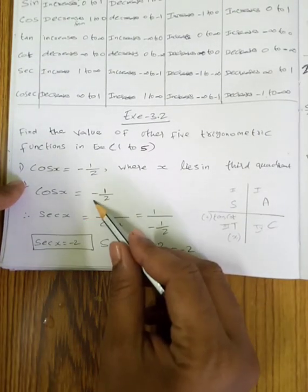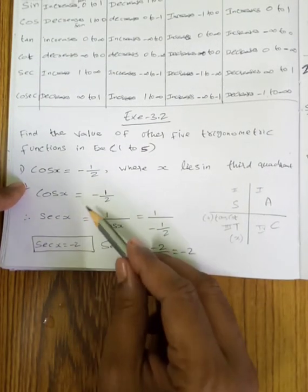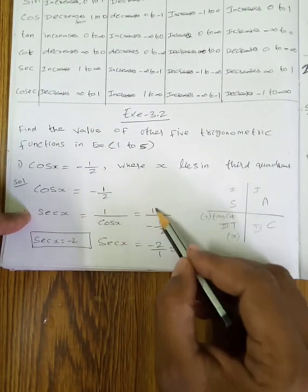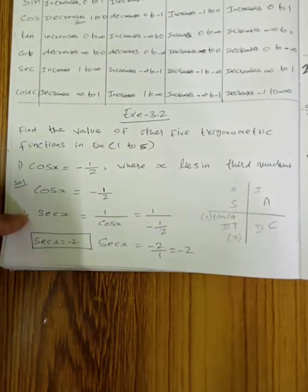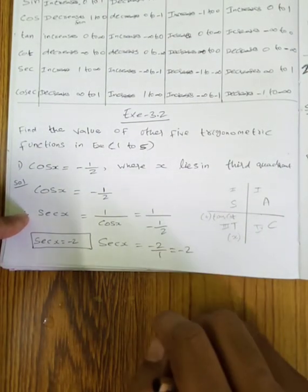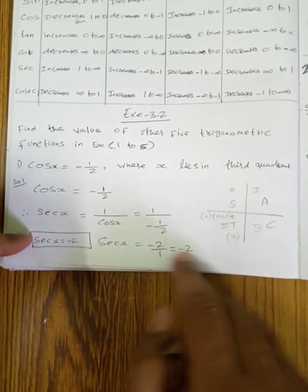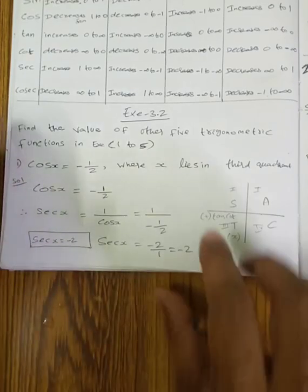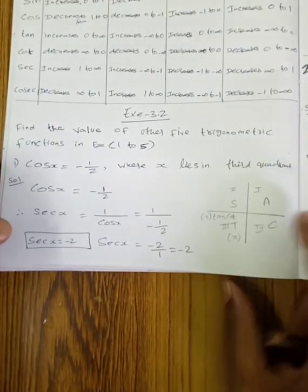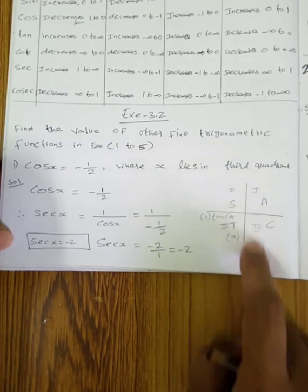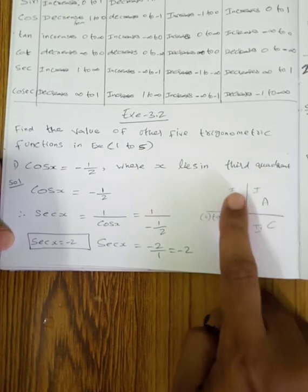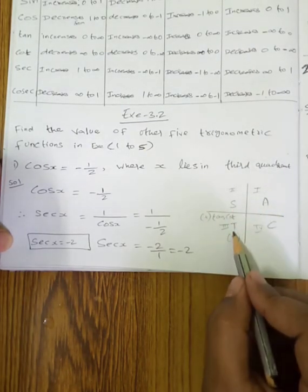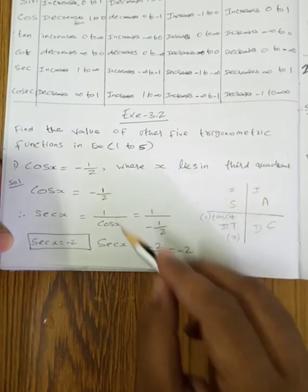Cos x equals secant inverse — so secant x equals 1 by cos x, which is 1 by (minus 1 by 2), so minus 2. Secant x equals minus 2. In the 3rd quadrant, A S T — tan and cot are positive.